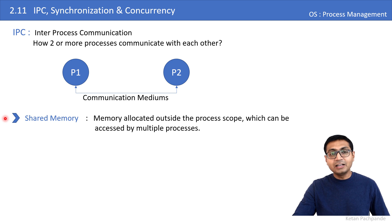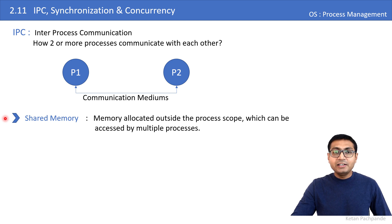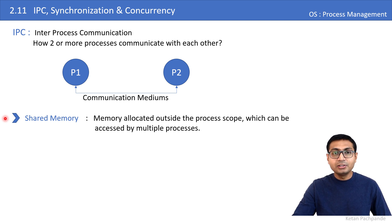The other process needs to know the address or the identity provided by the operating system at which the first process has stored the data. There are many articles on the internet about shared memory and how to declare it in C or C++ — just do some research on shared memory.